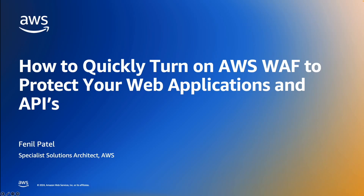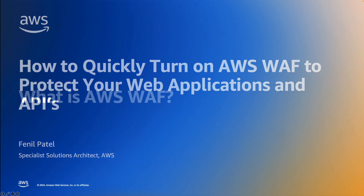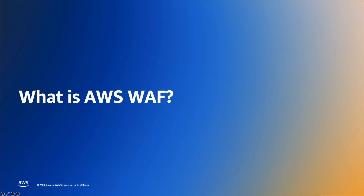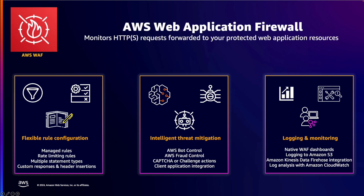Hi everyone, my name is Fennel Patel and today I would like to show you how you can quickly turn on AWS WAF with just a few clicks. But first, what is AWS WAF? AWS WAF is a cloud-native web application firewall that can protect your application and APIs against common web exploits and various bot threats. AWS WAF is a fully managed service, which means the resources needed will be provisioned automatically.